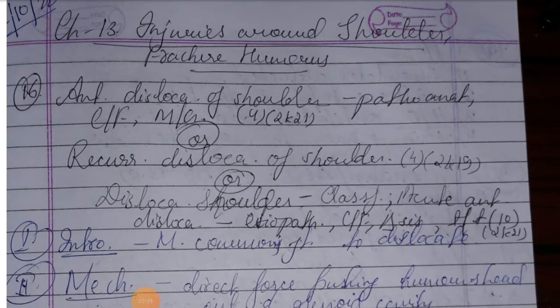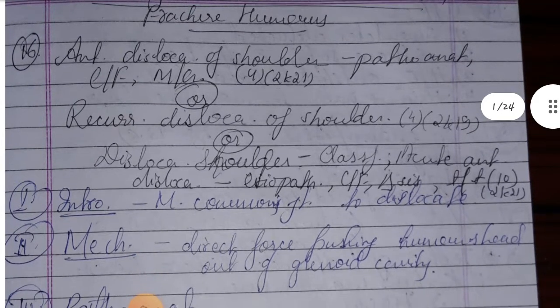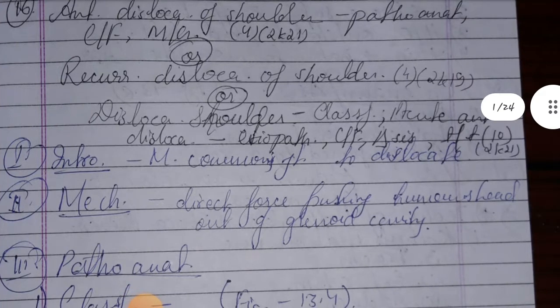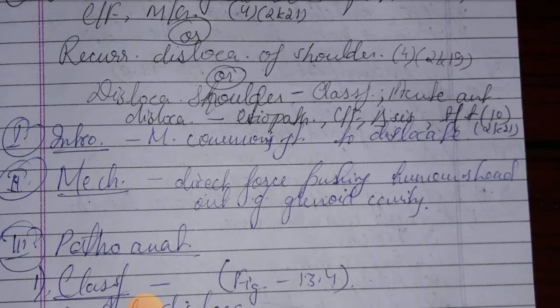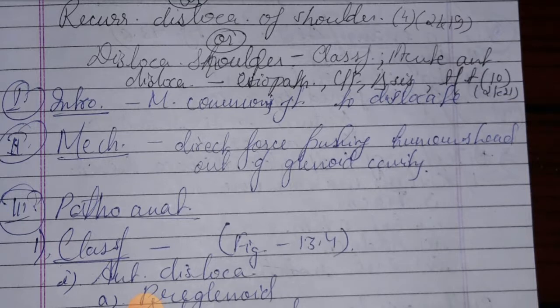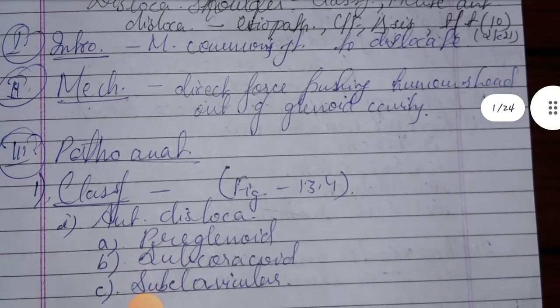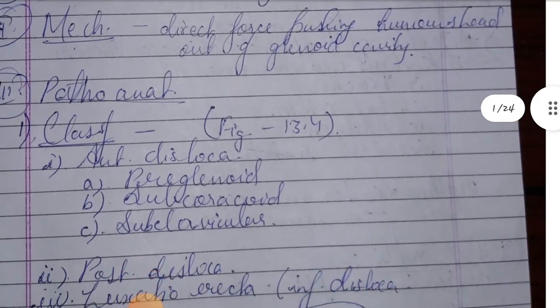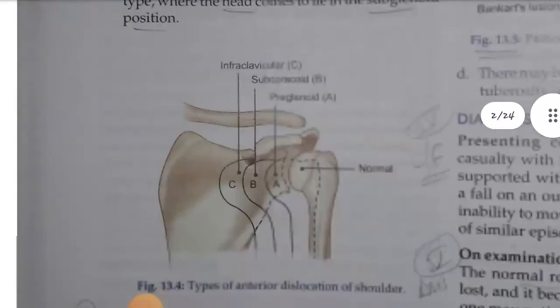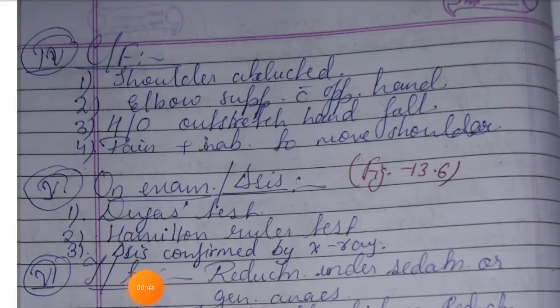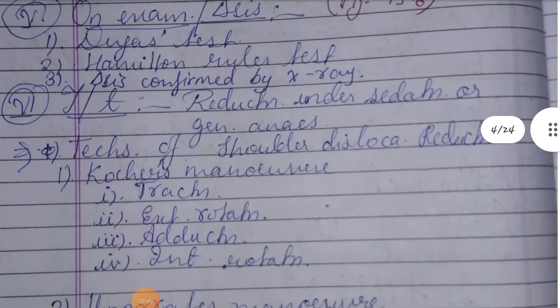In orthopedics, let's discuss the injuries around the shoulder and fractured humerus. This covers anterior dislocation of shoulder: its pathoanatomy, clinical features, and management. Topics include: introduction, mechanism, pathoanatomy, clinical features, examination and diagnosis, treatment, and complications.